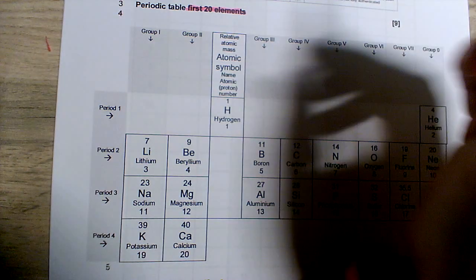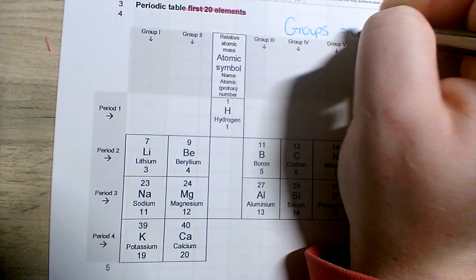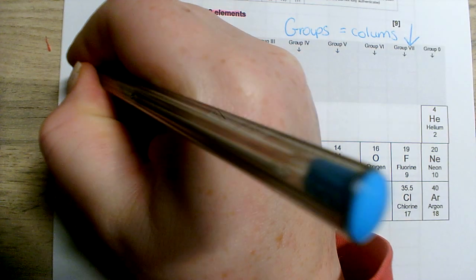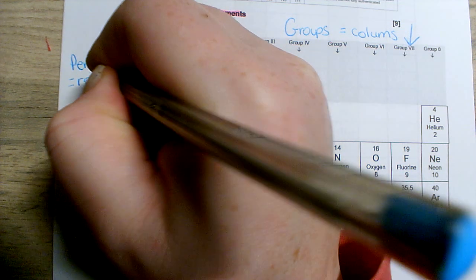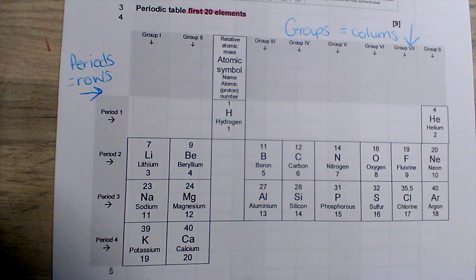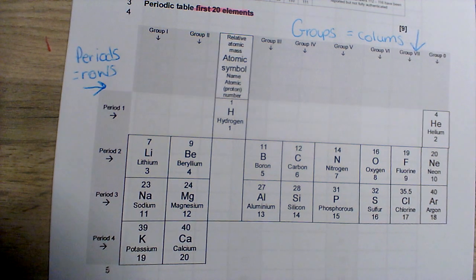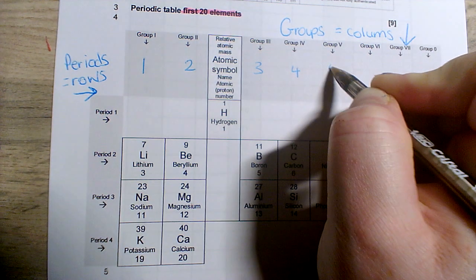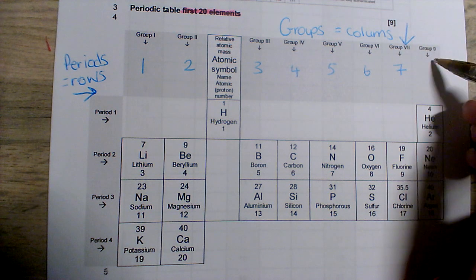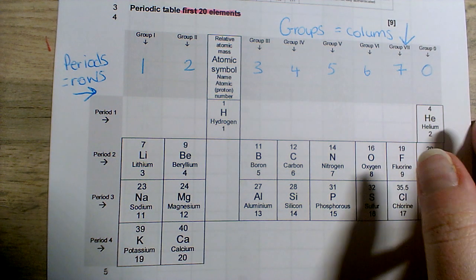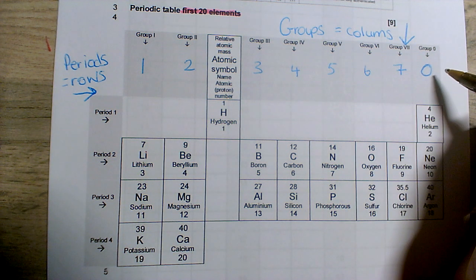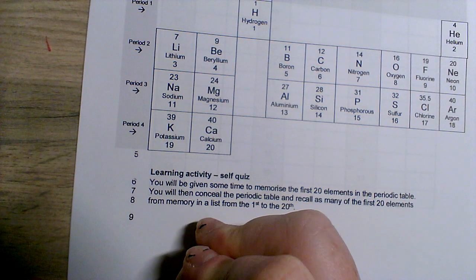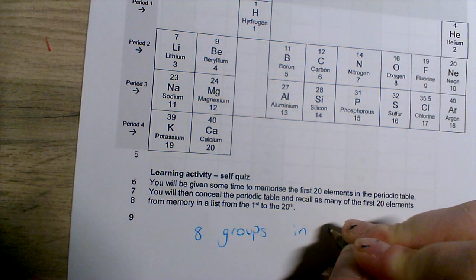Groups are the columns and they go down. Periods are the rows and they go across. As you can see, the groups are in Roman numerals: one, two, three, four, five, six, seven — and the last group is group zero, not group eight. This fact will be explained further in the topic. There are eight groups altogether.